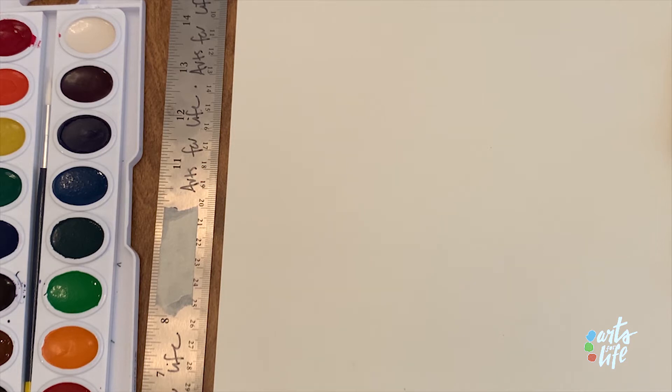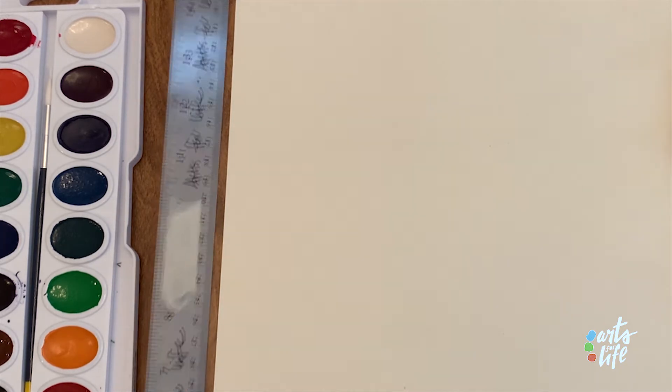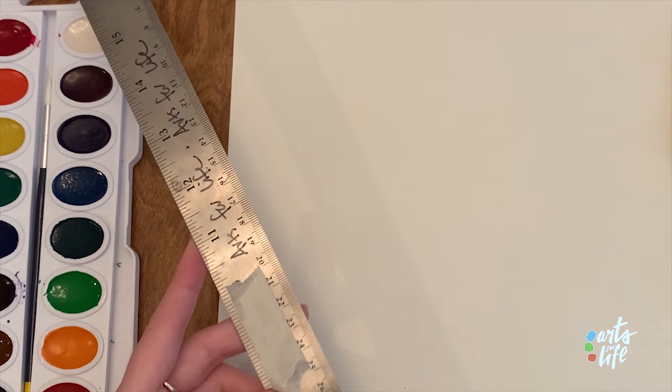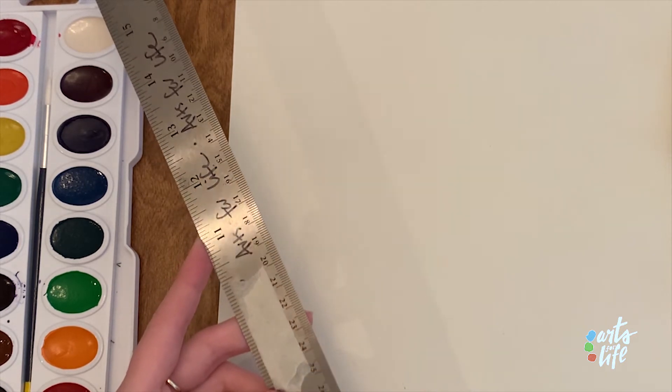So what I'm going to do is make a dot in the middle kind of at the bottom of my paper. And that's going to be my starting point for the end of the gem. Now I'm going to take my ruler and if you don't have a ruler you could use the edge of another sheet of paper that'll work just fine.